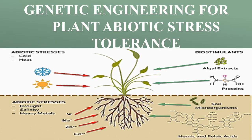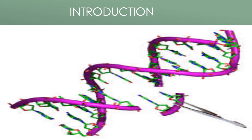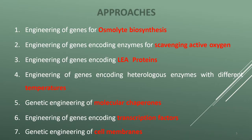Welcome to Life Science with KMD. Today I'm going to explain about genetic engineering for plant abiotic stress tolerance. A variety of abiotic stresses cause crop loss of about 50 percent or even more, which is why transgenic plants are targeted to solve this problem. There are different types of abiotic stresses, also called environmental stress, such as drought stress, salt stress, high temperature, and cold stress.